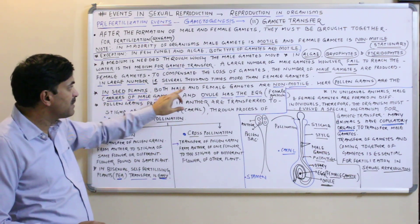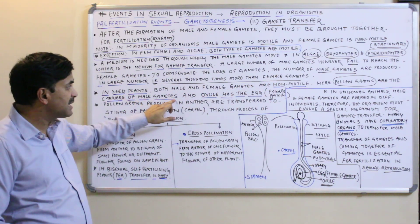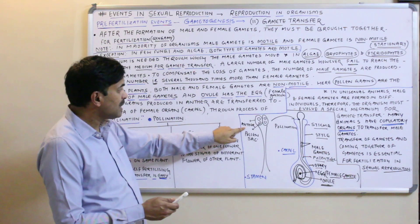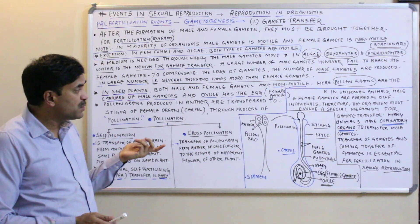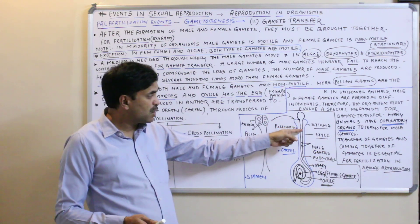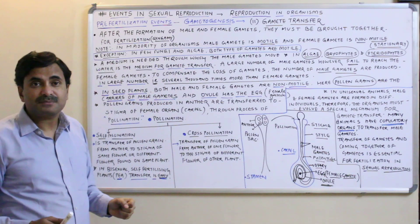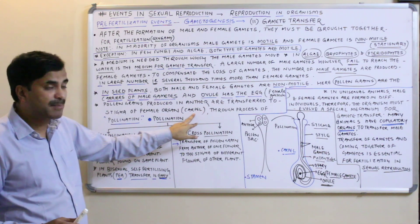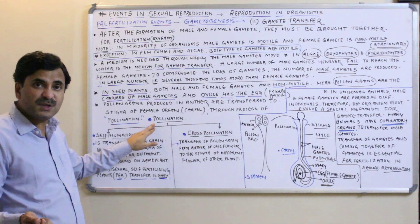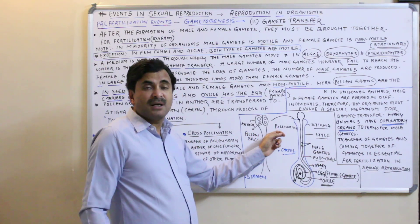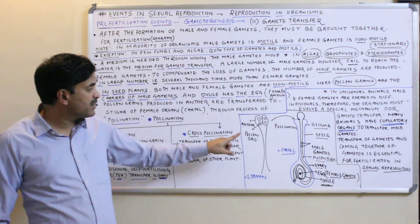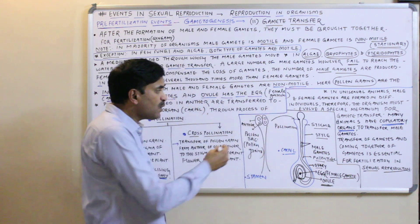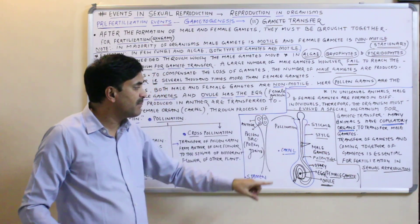In seed plants, since both male and female gametes are non-motile, pollen grains act as carriers of male gametes, while the ovule contains the egg as the female gamete. Pollen grains are produced in the anther. The process by which pollen grains are transferred from the anther to the stigma of the carpel is called pollination — specifically, the transfer of pollen grains from anther to stigma.